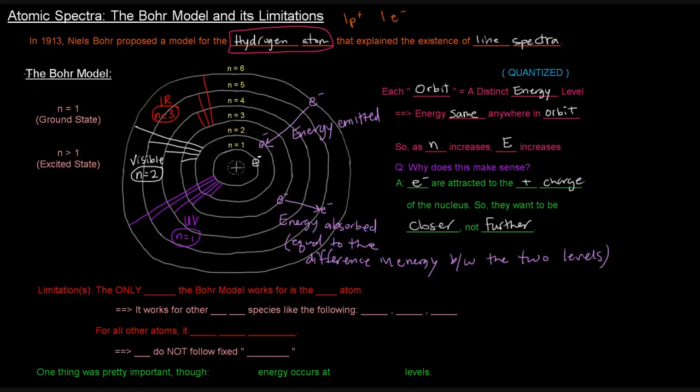So Bohr did a really good job explaining this model for the hydrogen atom. And it explained the existence of the line spectra that we mentioned in the previous video. So what was its limitation? The issue was that the only atom that the Bohr model works for is the hydrogen atom. Now, it works for other one-electron species like the ions HE+, or lithium-2+, or beryllium-3+. All of these species have only one electron. Helium has an atomic number of two, which means it has two electrons. If it loses one of those electrons, it only has one electron. So this model works for anything that only has one electron.